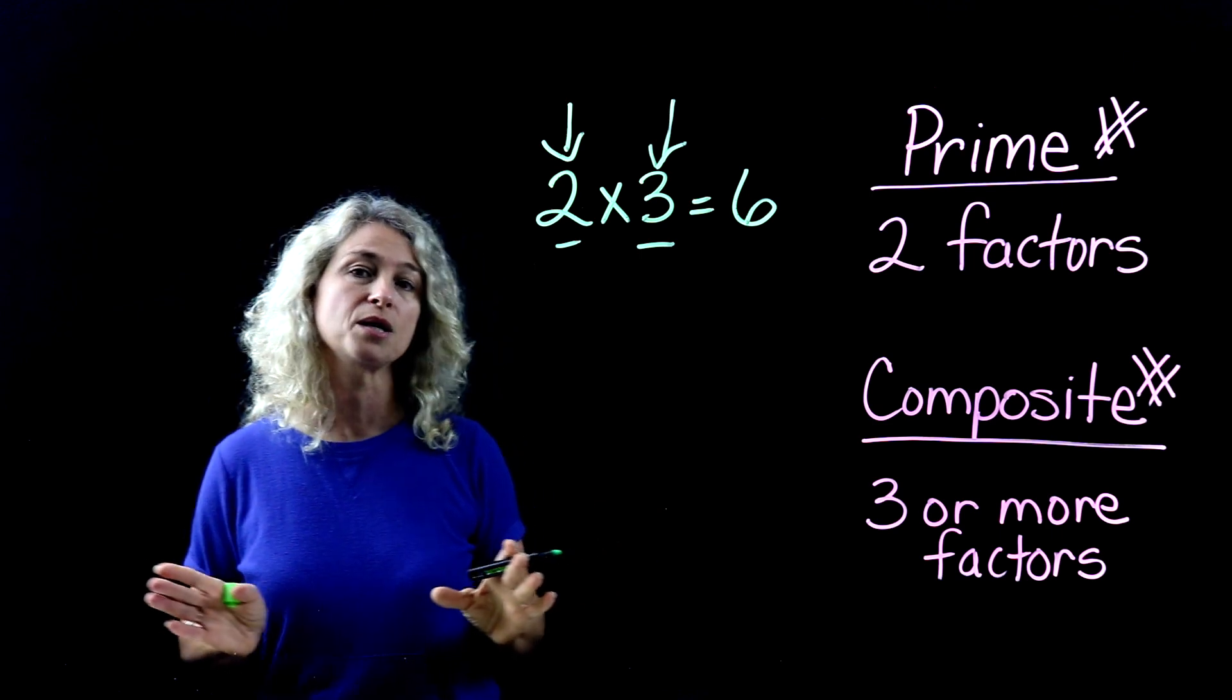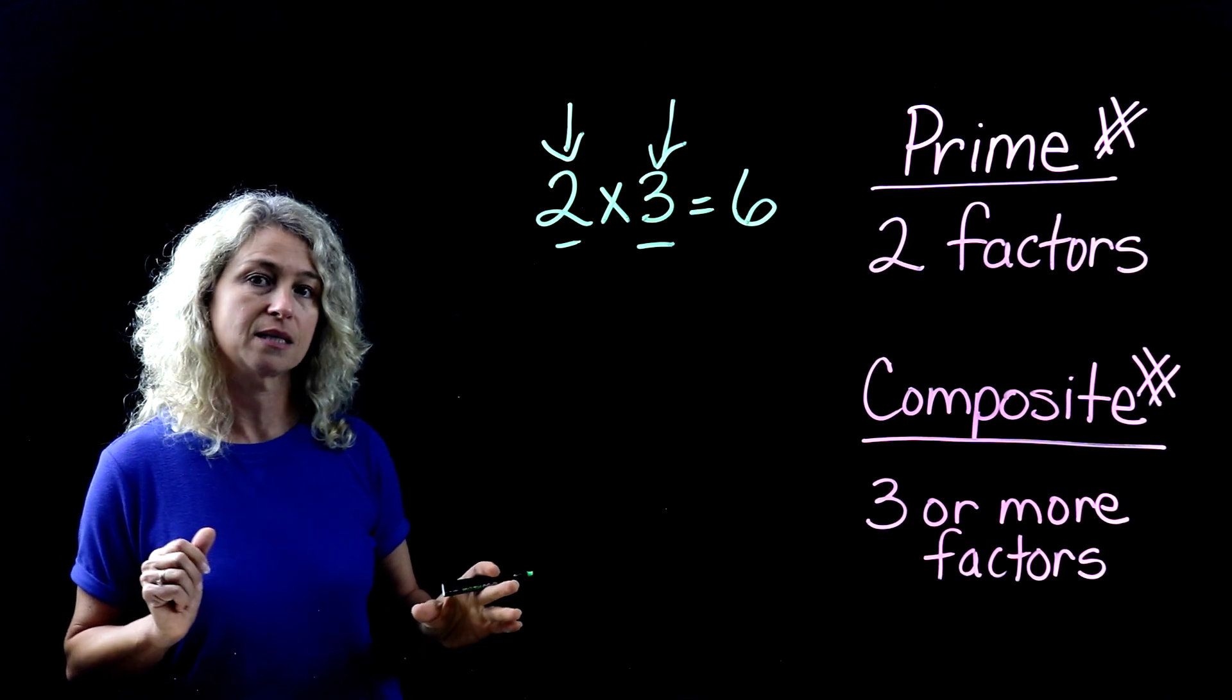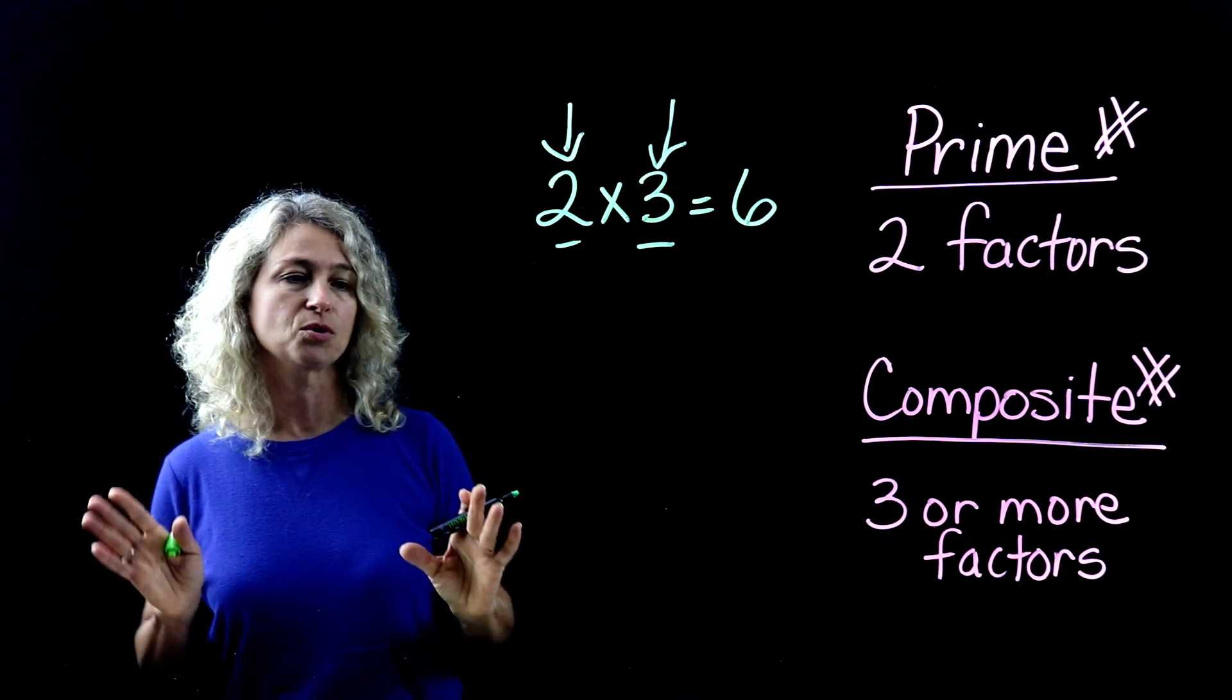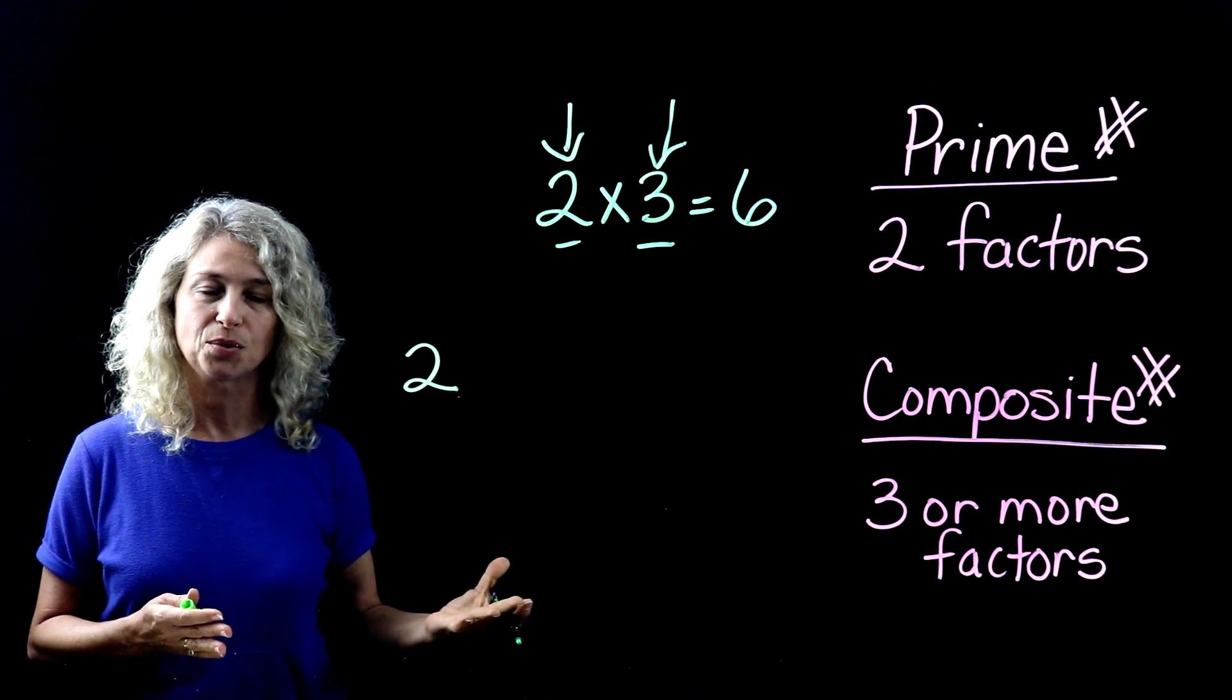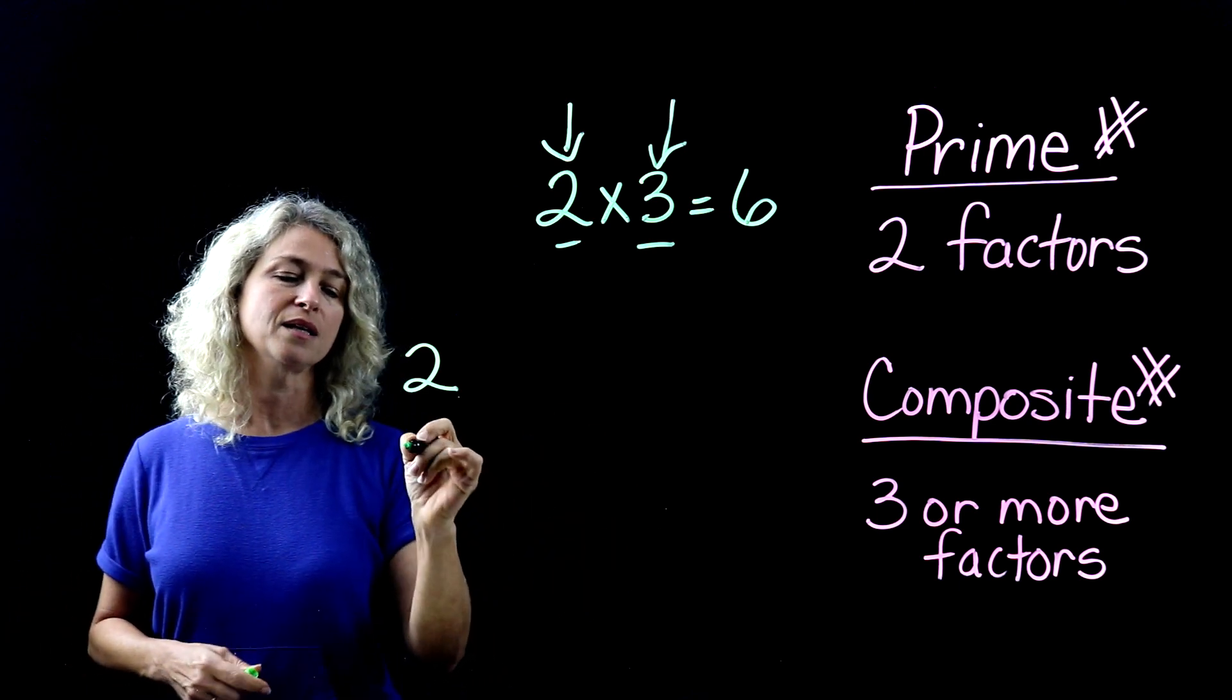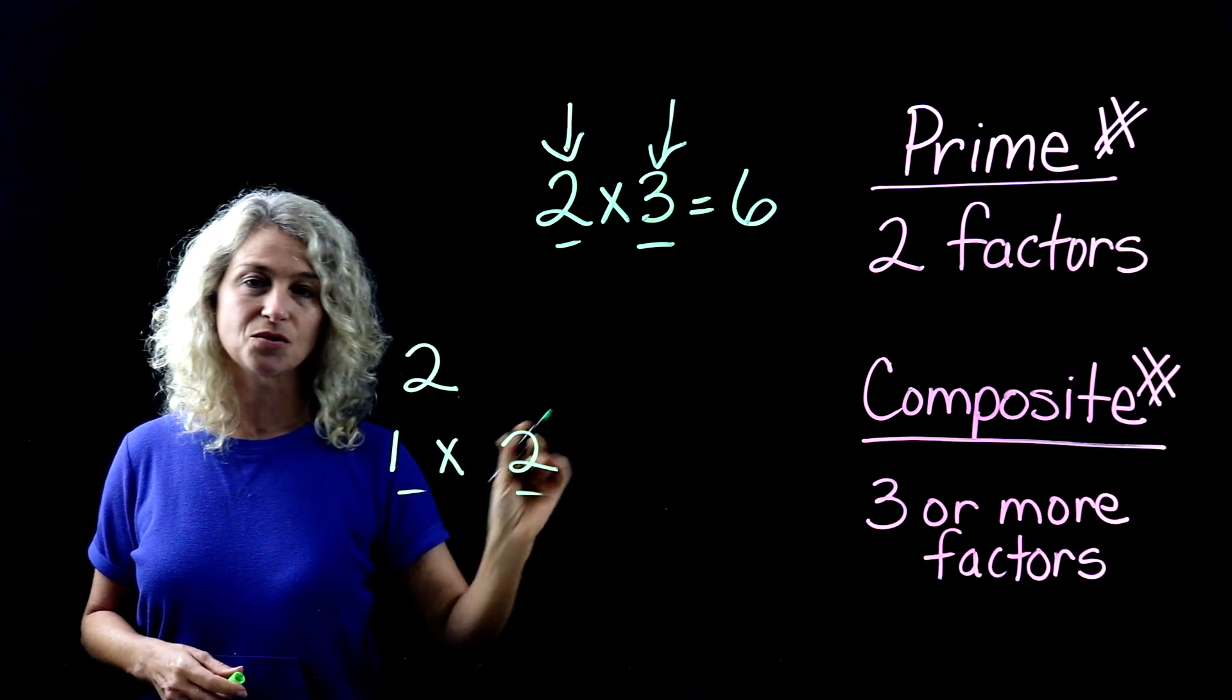We'll start with the number two. The number one is neither prime nor composite. But let's start with the number two. And let's list out all the factors for the number two. Starting with one times two. Here's a factor, here's a factor.